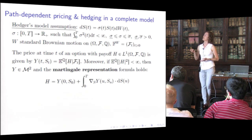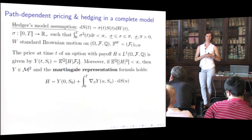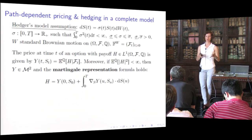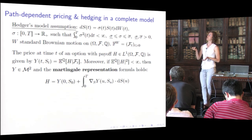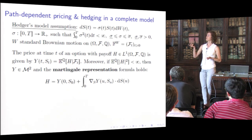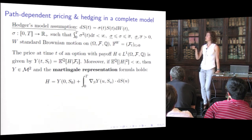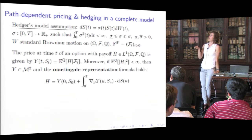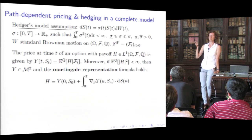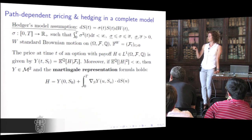Now we consider the case of a hedger. The hedger chooses a model — needed to price and build trading strategies. We choose, for example, a generalized Black-Scholes model. For a possibly path-dependent payoff H, there is a martingale representation formula giving the replicating strategy as the vertical derivative of the value functional. This is from the Cont-Fournie 2012 paper. So in the Black-Scholes world we have a replicating strategy given by a delta hedge.